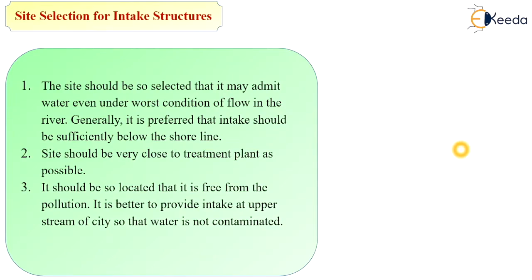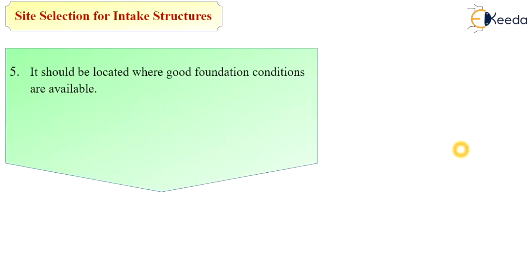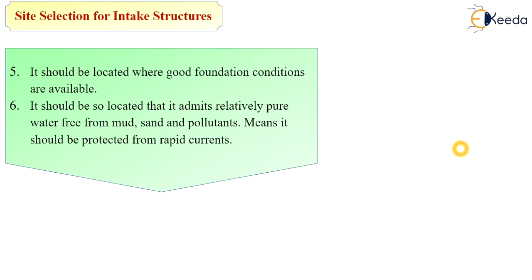The intake should be located so that it is free from pollution. It is better to provide intake at the upstream of the city so that water is not contaminated. It should not interfere with river traffic if any. It should be located where good foundation conditions are available, and should admit relatively pure water free from mud, sand and other pollutants, and should be protected from rapid currents.